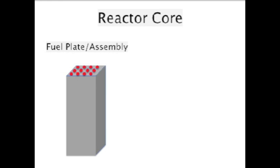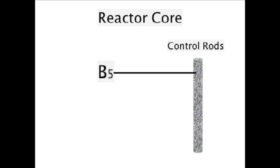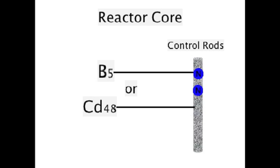The fuel plates are contained within the reactor core. In between the fuel plates within the core are control rods, which are made of boron or cadmium and are neutron deficient, so they attract and absorb neutrons in order to slow and stop the fission chain reaction.